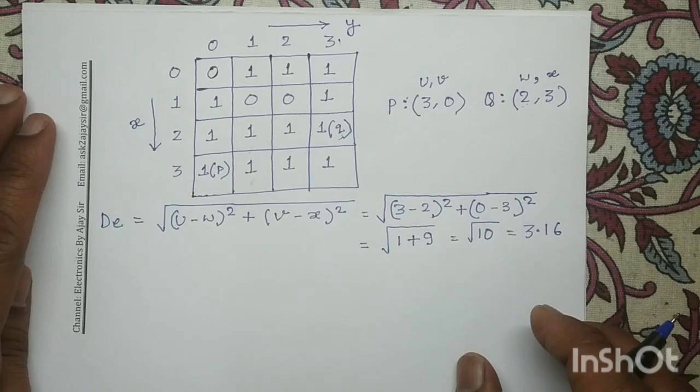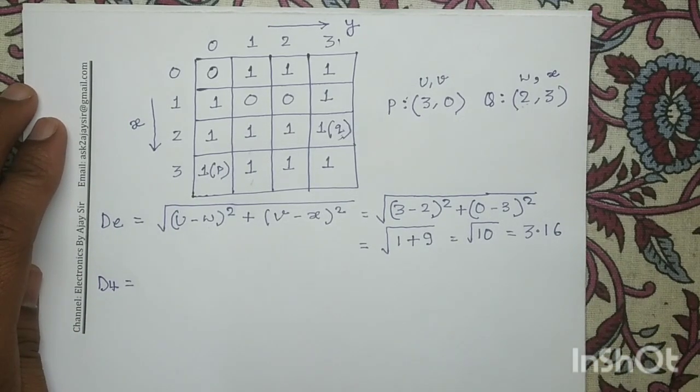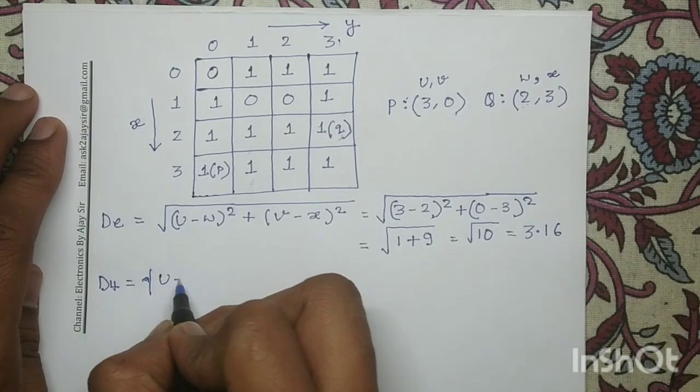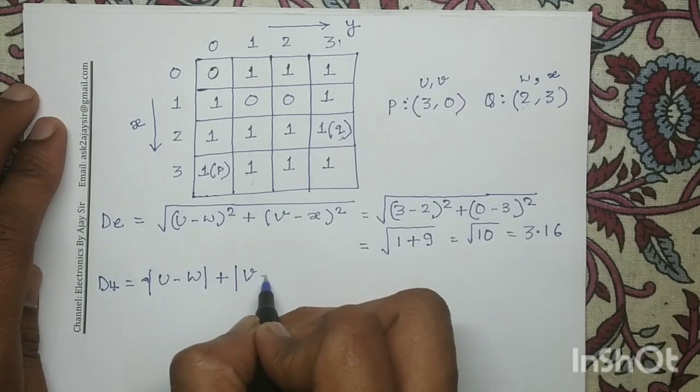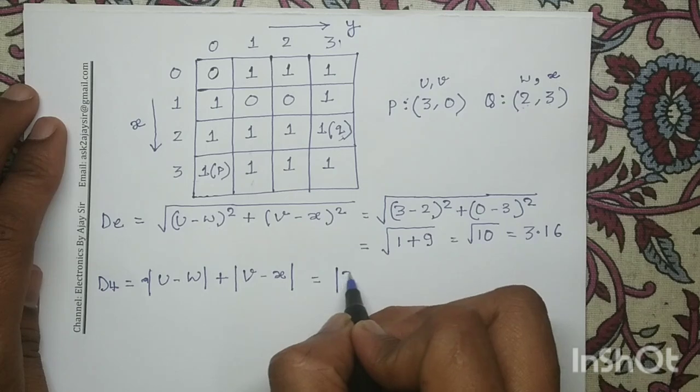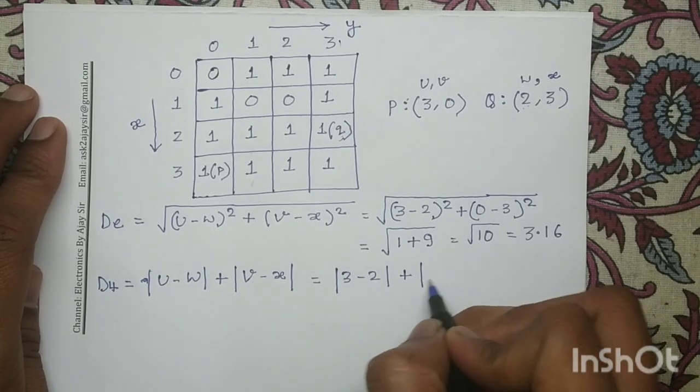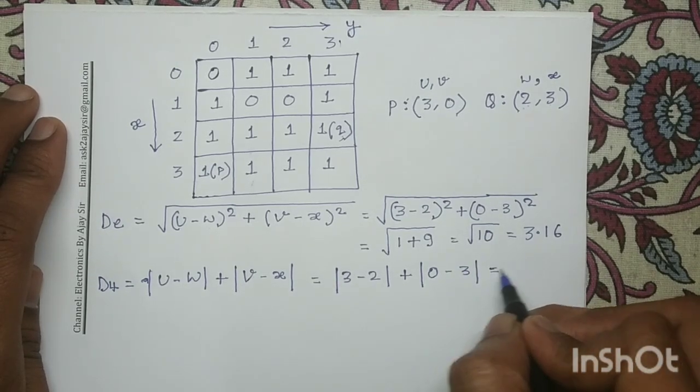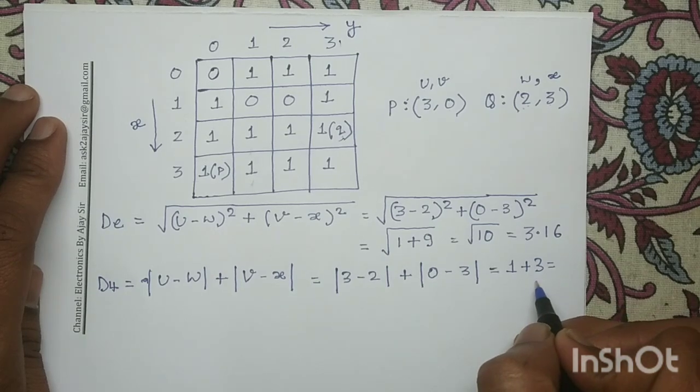Next we will determine the D4 distance. The mathematical equation of D4 distance is |U minus W| plus |V minus X|, which equals 1 plus 3 equals 4.